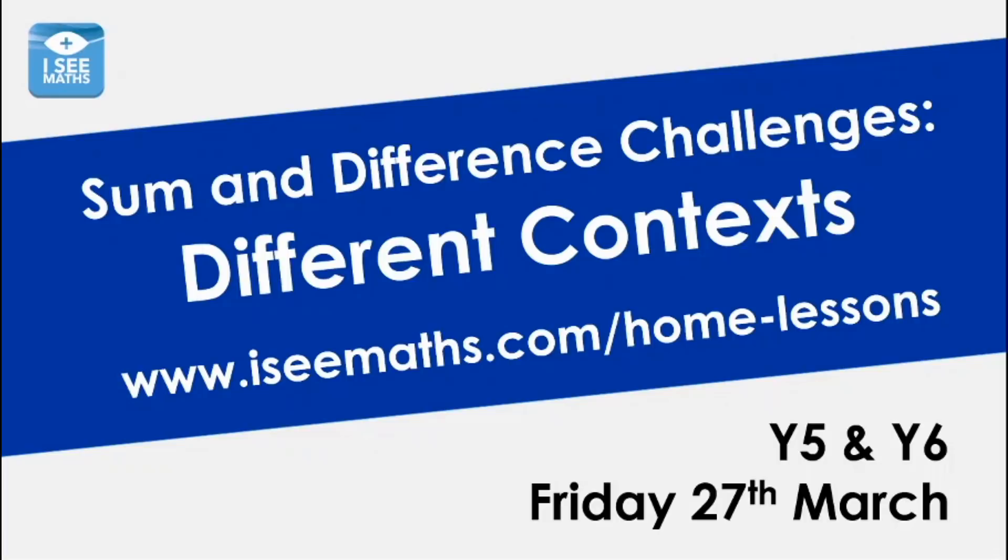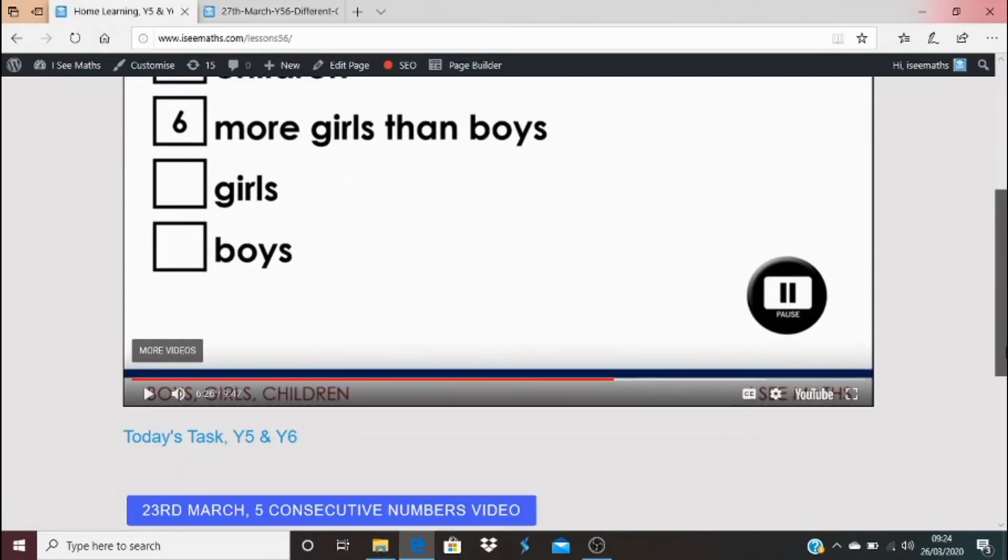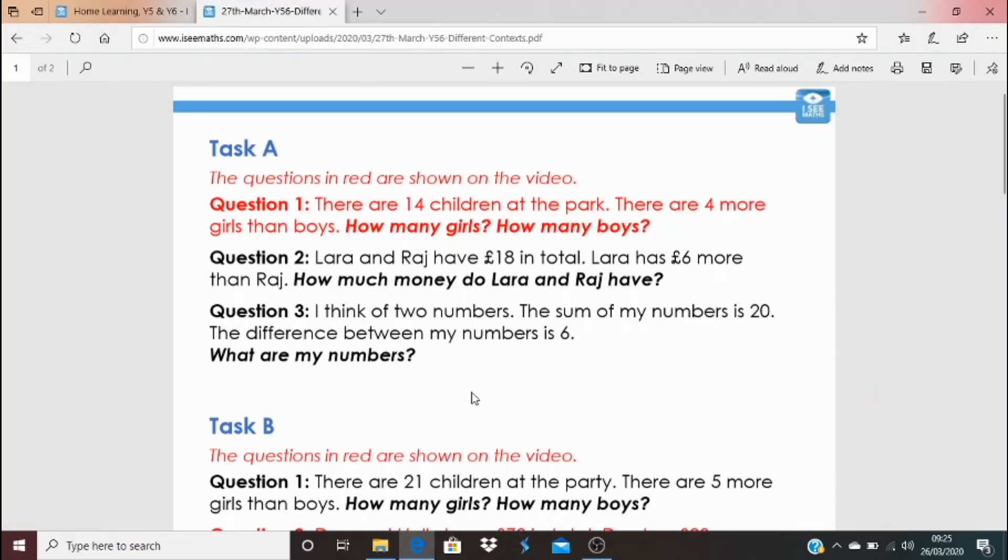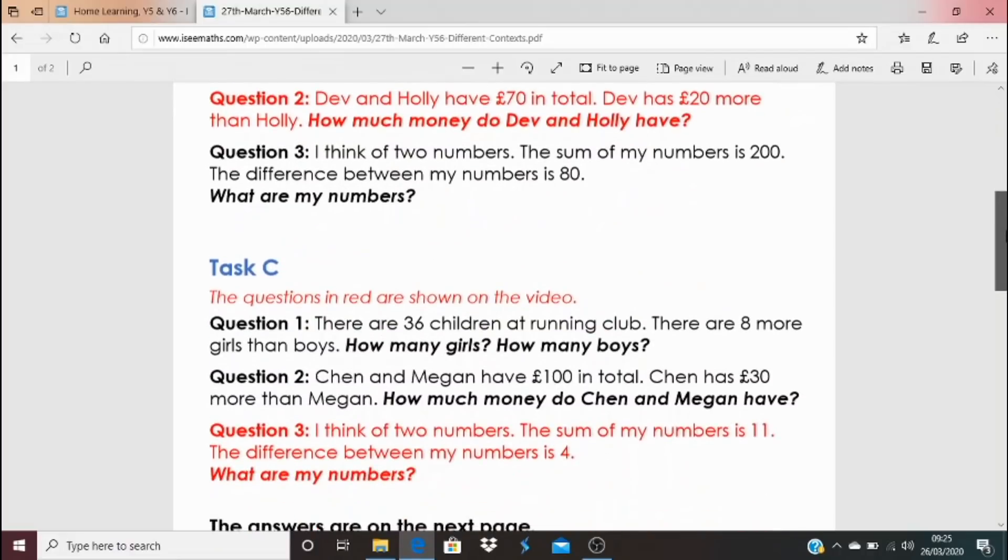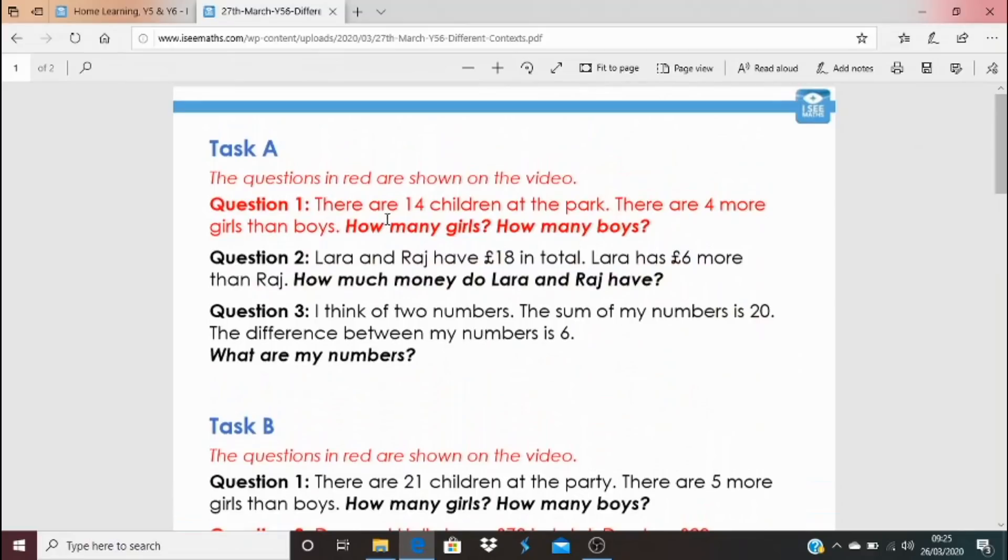We're going to explore different context questions in more detail now. Now the way that I've ordered things is slightly different today. You'll find this video from either all home lessons or maybe you're on home learning year 5 and 6 like this page here. But wherever you are, you'll go underneath the video and click on today's task year 5 and 6 and that will bring up the different tasks for you to have a go at. As normal, we've got different tasks to choose from: Task A, Task B, and Task C. And again, the answers are on the next page, just like normal.